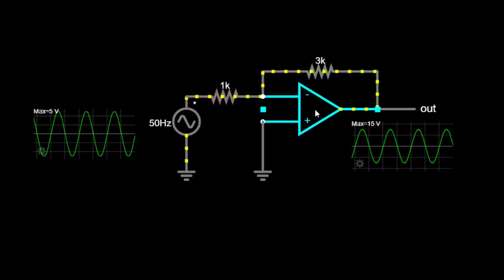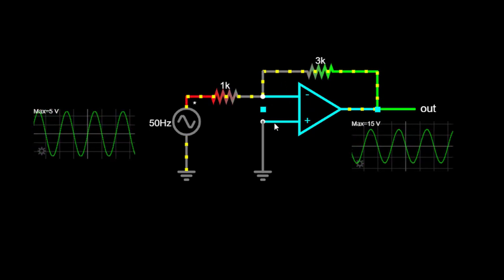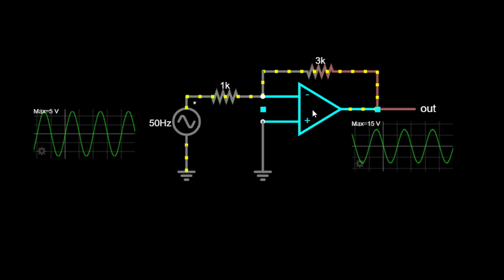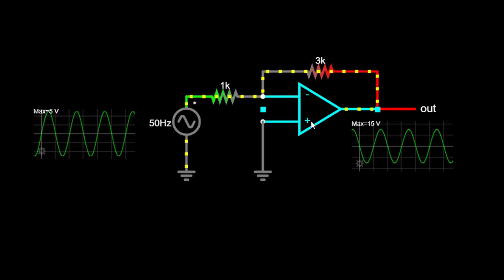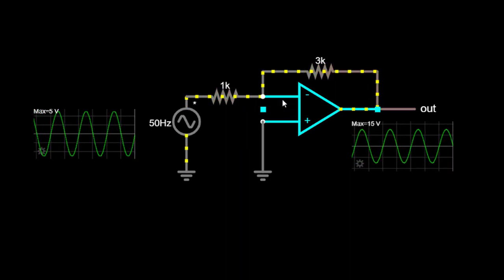The OPAMP has two input pins, the inverting input and the non-inverting input. In the inverting amplifier configuration, we connect our input signal to the inverting input.